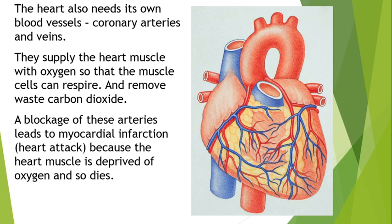We'll look at how the heart muscle contracts in the next lesson. If you block the coronary arteries, that is how you generate a heart attack — a myocardial infarction. If they are blocked, oxygen and glucose can't get to that particular area of the heart wall, so those cells won't be able to respire, won't be able to produce ATP, and therefore won't be able to contract. The heart should continuously be contracting at a set rhythm — if it can't, that is a heart attack.